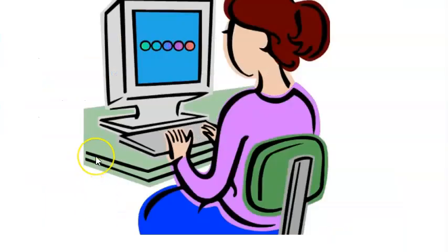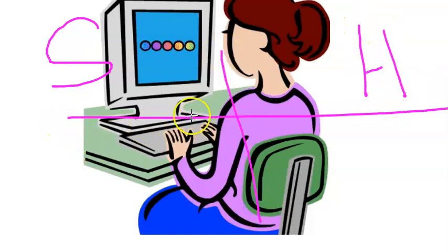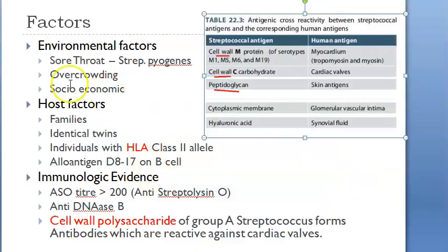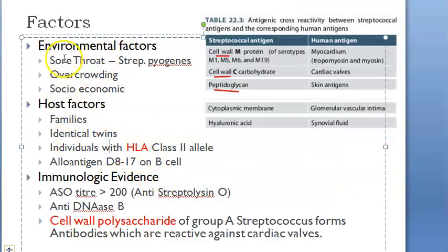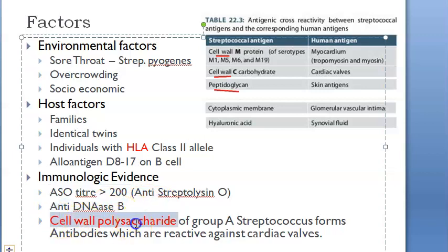To summarize: the protein on streptococcus is very similar to proteins in our body, so when streptococcus infects us, we make antibodies that start attacking our own tissues. These patients will have an ASO titer greater than 200 due to the streptococcal infection. Anti-DNase B can also be detected, as can cell wall polysaccharide of Group A streptococcus.